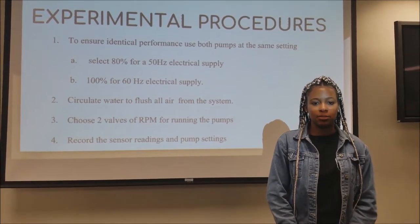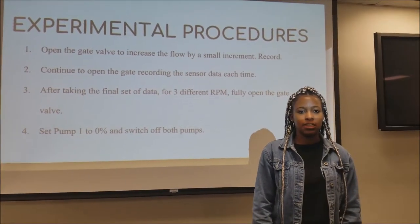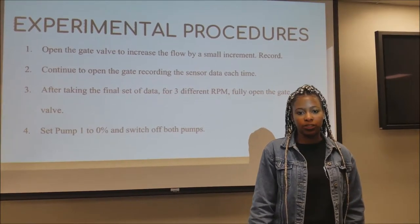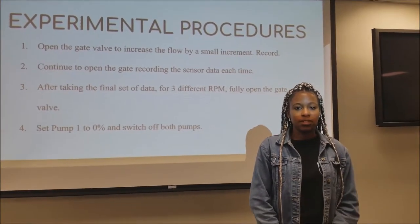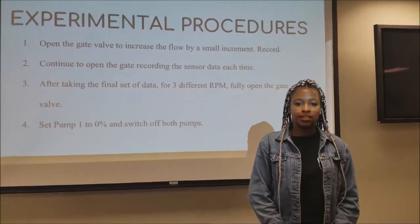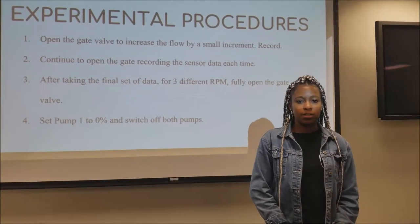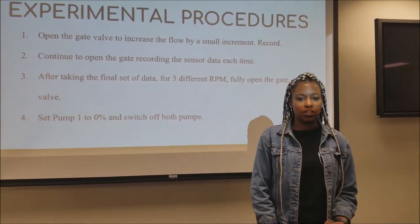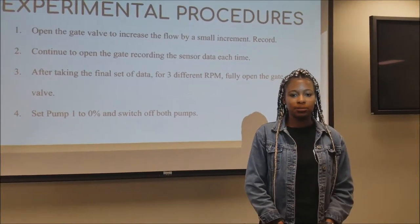One RPM should be the highest obtainable. At a flow rate of zero, select the go icon to record the data, which will appear on the results sheet. Then open the gate valve in small increments to get different flow rates for each pump speed.